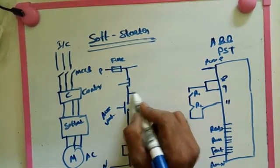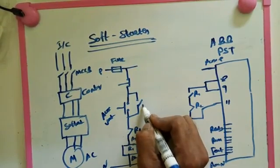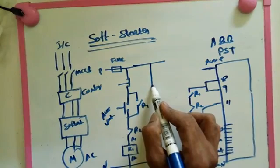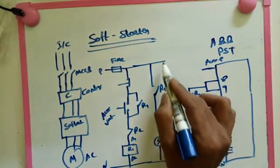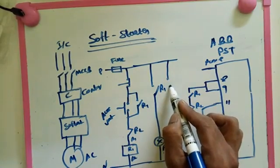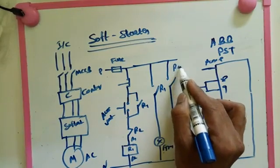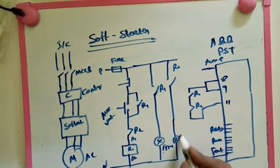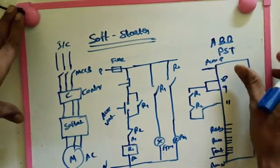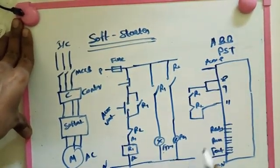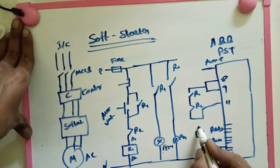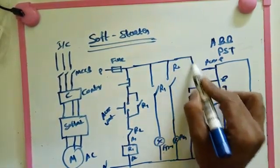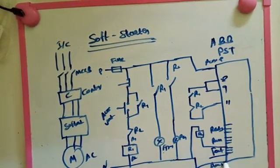After that we make for continuous running R1 NO here. After that we make R1 for indication, running indication. We put running indication maybe green. After that for tripping indication we put R2 here, for tripping we put red. After that we make fault relay to make R2 and neutral. This is a very simple method to make control drawing of soft starter.